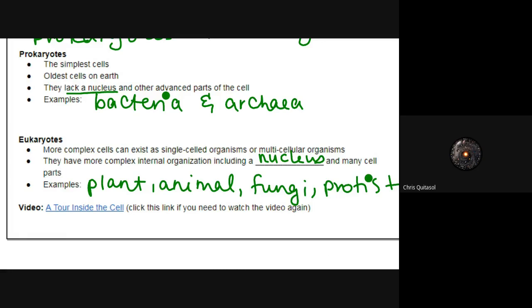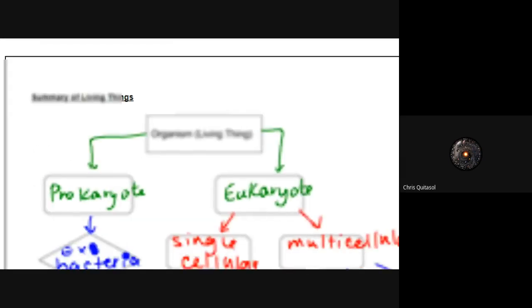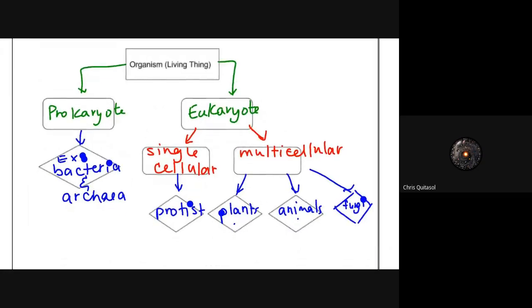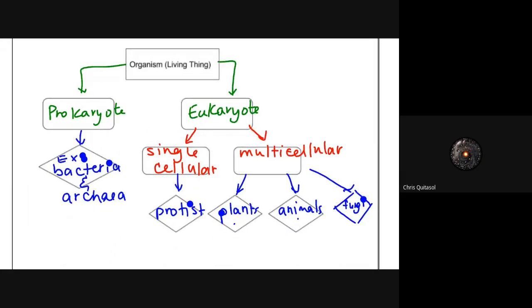So just in terms of this flow chart with regards to living things, you also have a Venn diagram which I'll get to as well, but organisms are broken down into two main categories: prokaryotic or eukaryotic. Prokaryotic are like bacteria and archaea. Eukaryotic can be either single or multicellular with their constituent examples below.